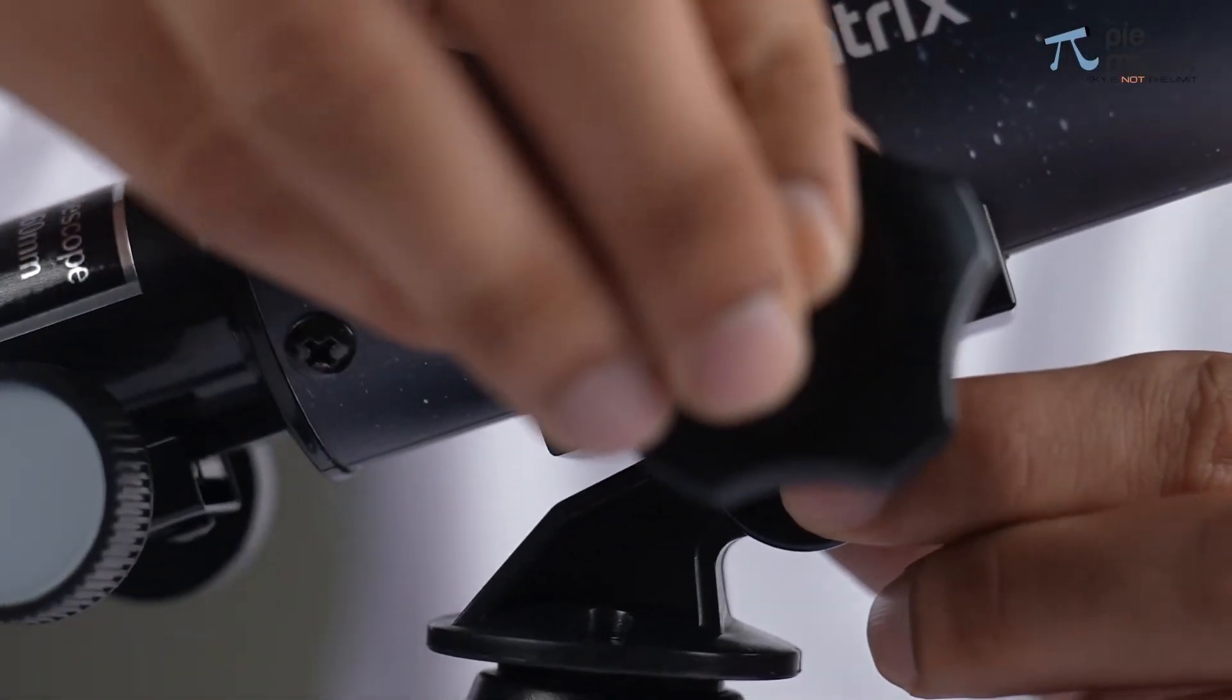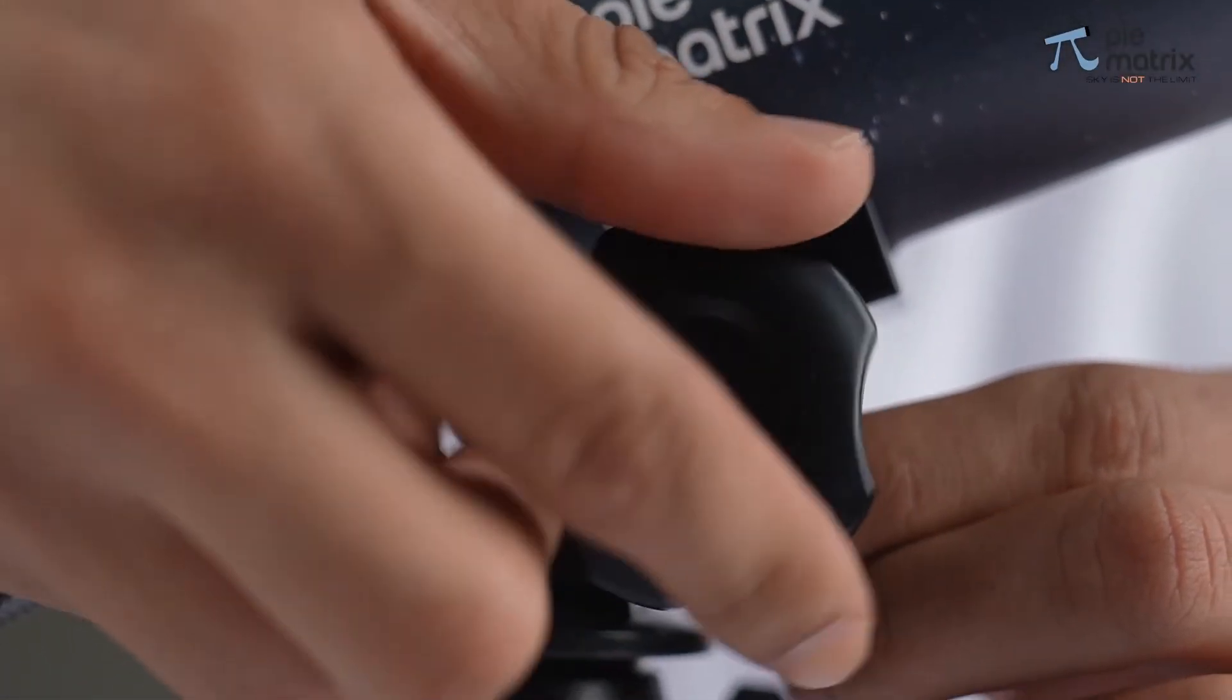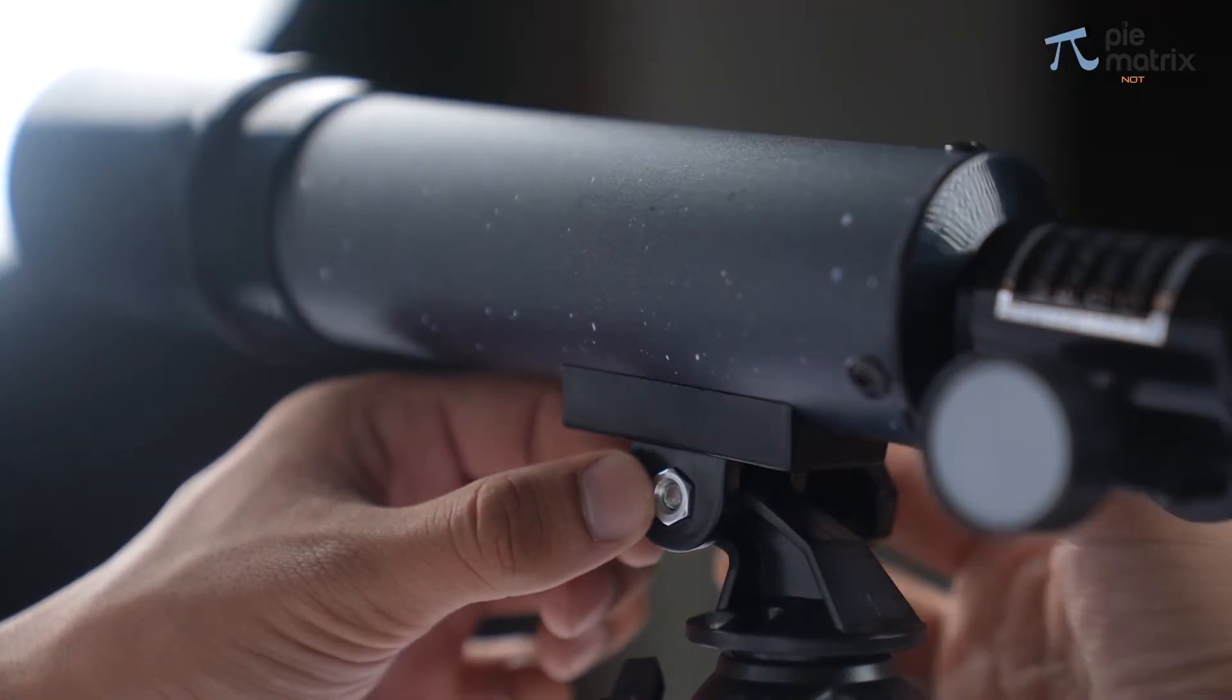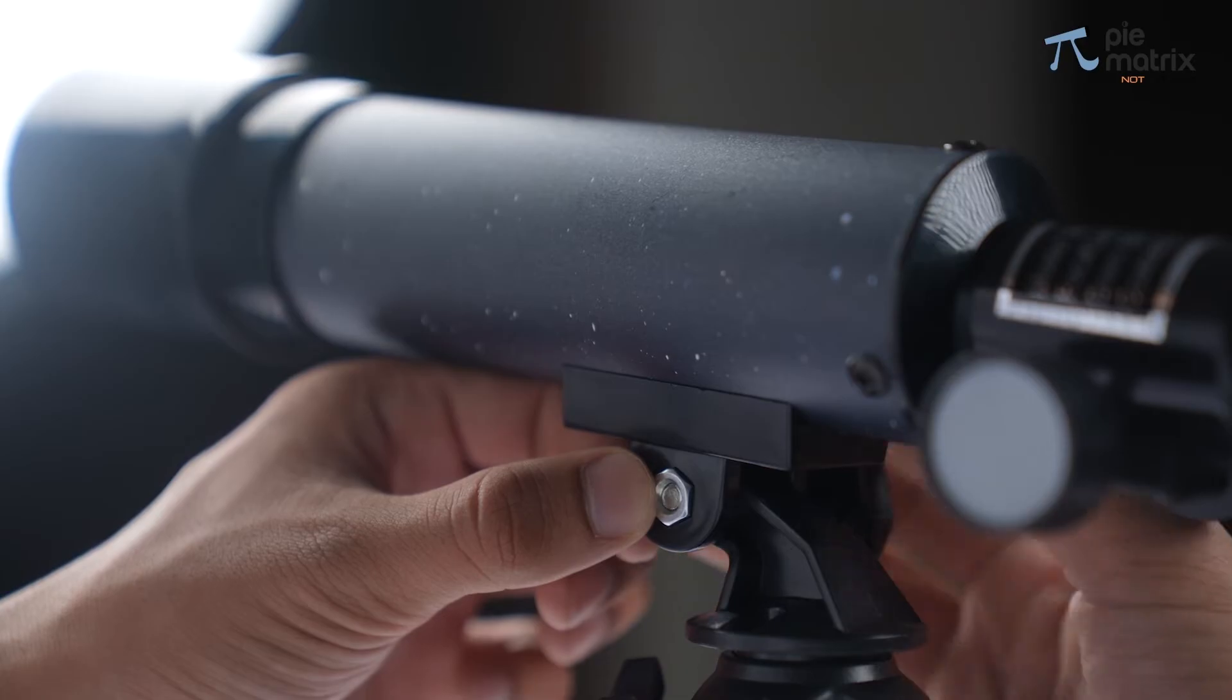Insert the knob through one end of the hole and secure it using the nut from the other end. Remember to tighten the knob by rotating it clockwise.